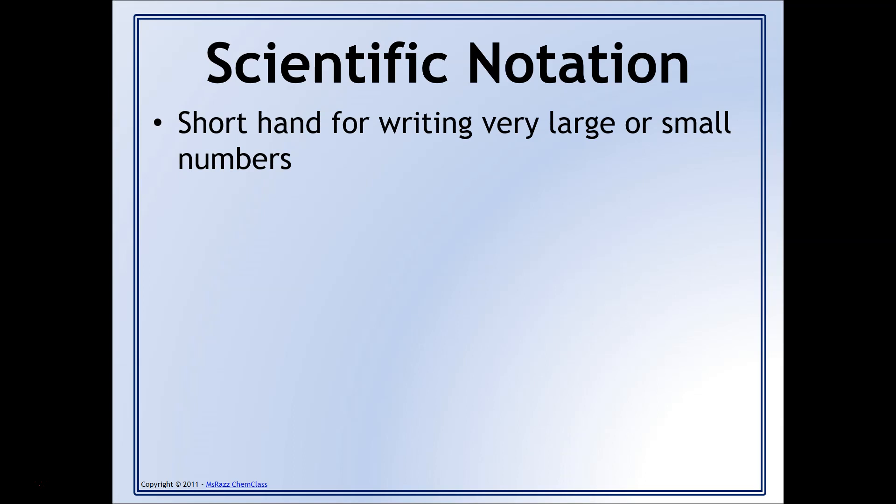Scientific notation is a shorthand way for writing very large or small numbers. In chemistry, we're going to be more often than not working with some pretty large numbers, especially when we're talking about atoms and molecules, because in order to have a measurable amount we need a lot of them. So that's why scientific notation really comes in handy for chemists.